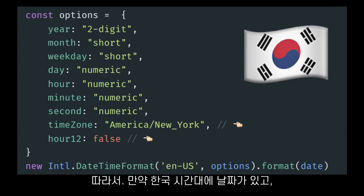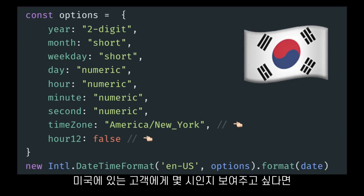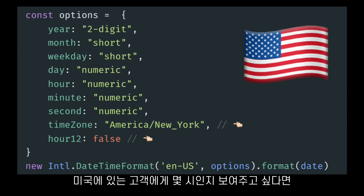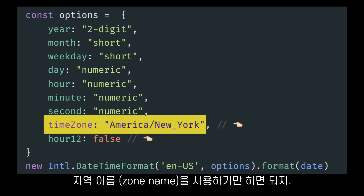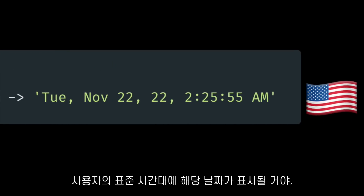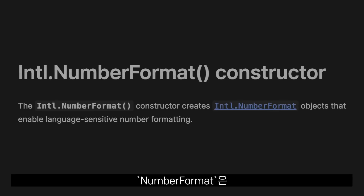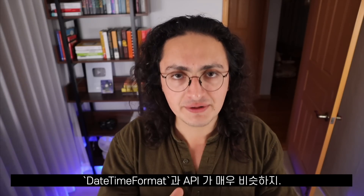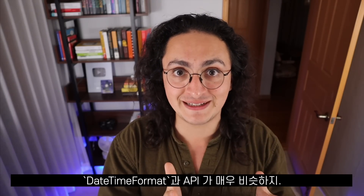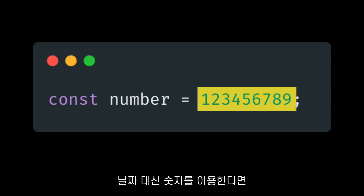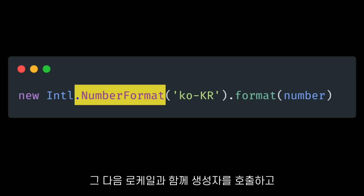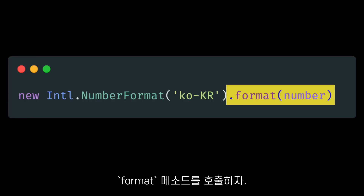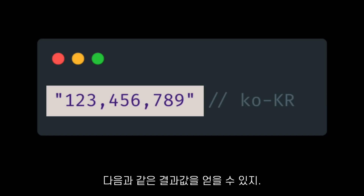So if you have a date in the Korean time zone and you want to show your customers in America what time that would be, all you have to do is use the time zone name, and your users will see that date in their time zone. NumberFormat is another constructor that, as you can guess, helps us format numbers. The API is very similar to DateTimeFormat — instead of a date, we use a number, then we call the constructor with a locale and call the format method to get an output like this.